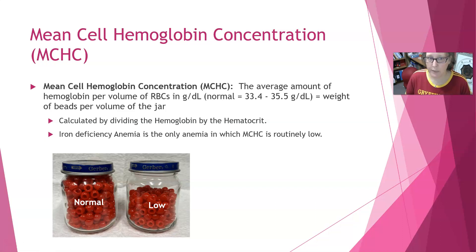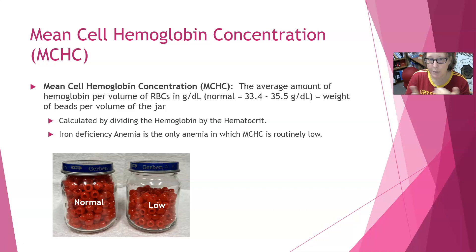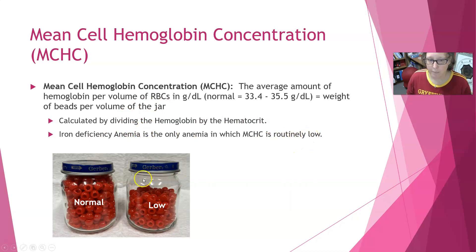The third index is the MCHC, which is the mean cell hemoglobin concentration — the average amount of hemoglobin per volume of red cell. It takes into account both the weight of the hemoglobin and the volume of the cell, so it considers the amount of beads versus the volume of the jar. The MCHC is normally calculated by dividing the hemoglobin by the hematocrit. Iron deficiency anemia is the only anemia in which the MCHC is routinely low.